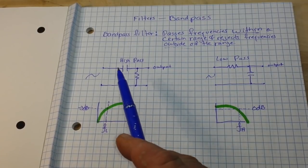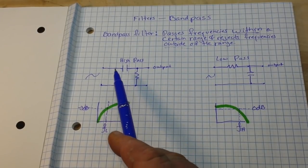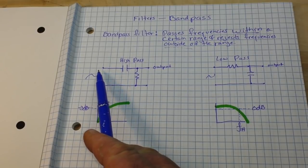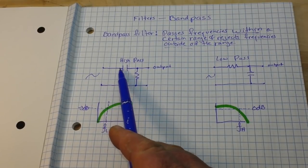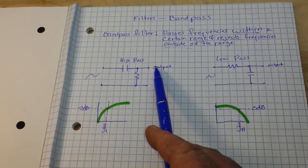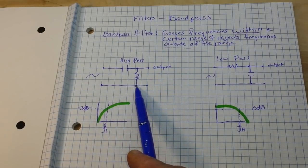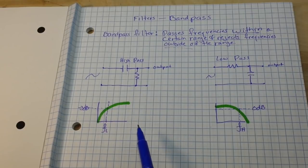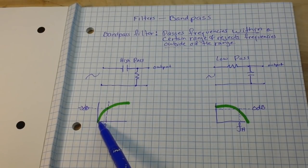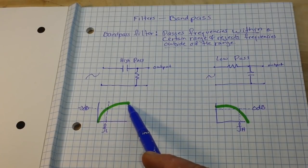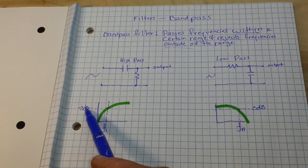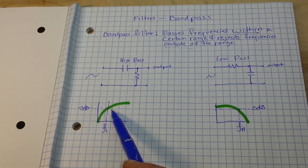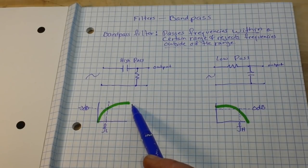So first of all, let's look at our high pass filter. It consists of a sine wave input going through a capacitor to the output with a parallel resistor going to ground. And the frequency response of our high pass filter looks like this. Anything below this line is going to be attenuated. Anything above it is going to be passed.